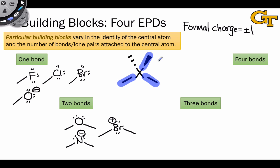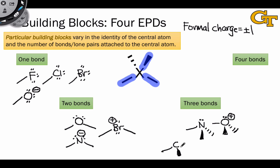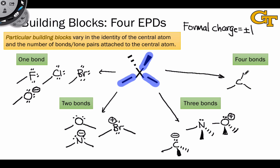Three bonds in the tetrahedral building block is typical of nitrogen and amines. We also see this for oxygen with a formally positive charge, since the formal electron count around oxygen is 5. When carbon appears at the center of this building block, the carbon ends up with a negative charge. Finally, the tetrahedral building block with four bonds and no lone pairs is the classic tetrahedral carbon — a neutral carbon atom with four single bonds pointing to the corners of a tetrahedron. You'll also see this in ammonium cations, where carbon is replaced by nitrogen, making it formally positive.